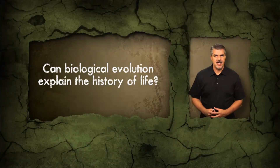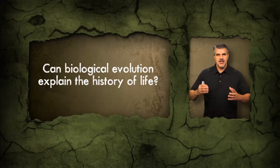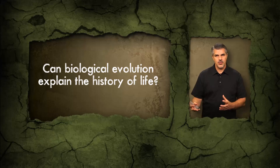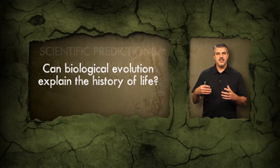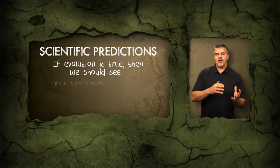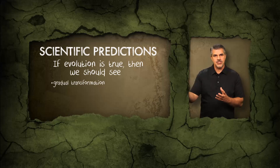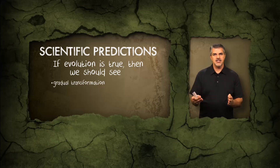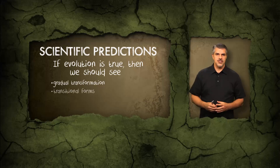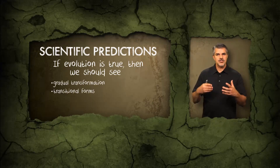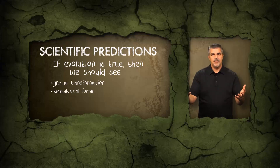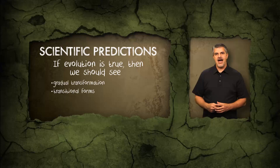In order for the evolutionary paradigm to explain the history of life on Earth, the fossil record needs to look a certain way. It needs to display gradual evolutionary transformations where one major group is transitioning to another, and these transitions need to be characterized by numerous transitional intermediate forms. These are features that flow from the evolutionary paradigm — predictions, if you will, for evolution to be valid.